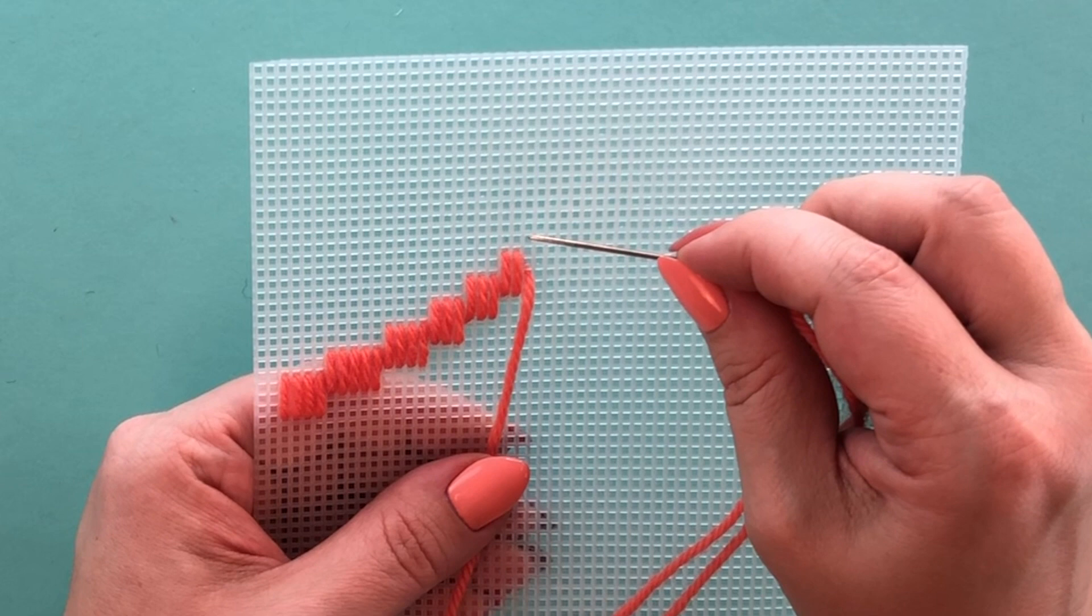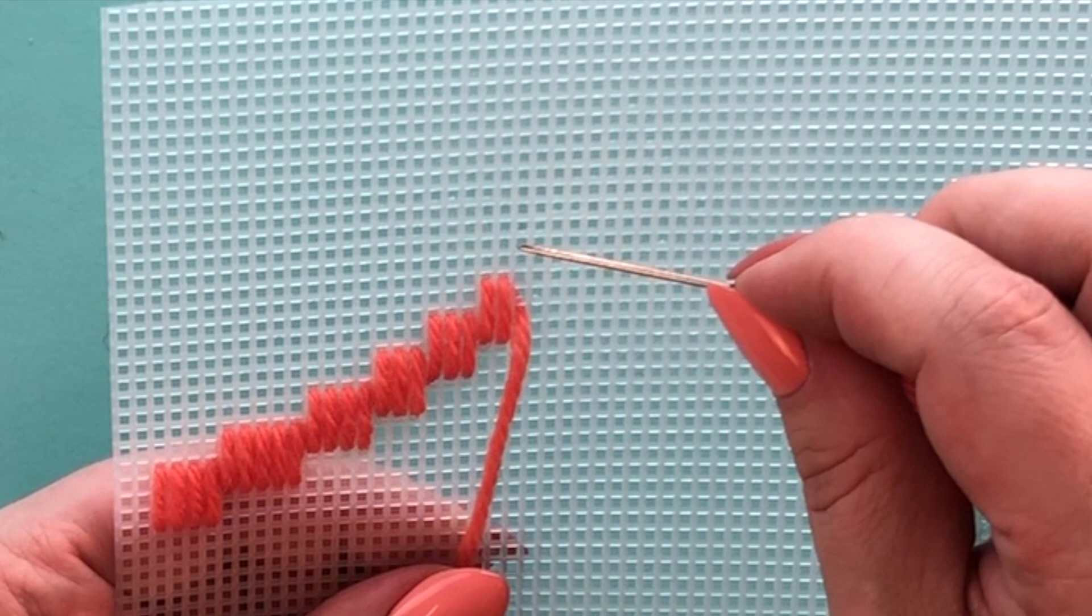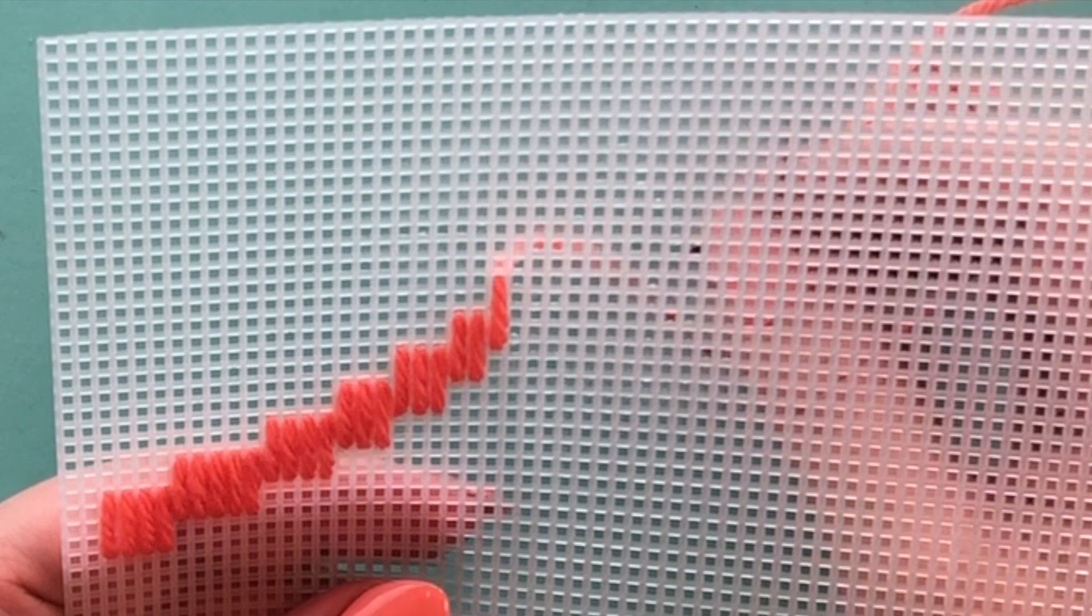Here my yarn has come out of this square and I'm gonna skip four horizontal bars - that's one, two, three, four - and I'm gonna go down in the next square, pull that through.